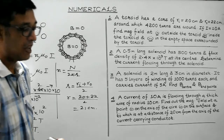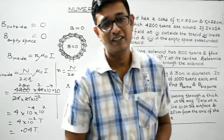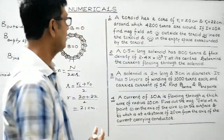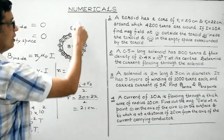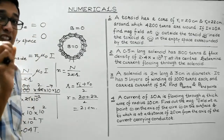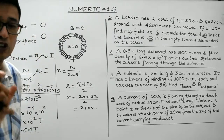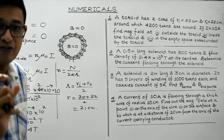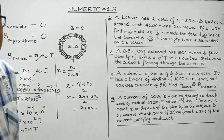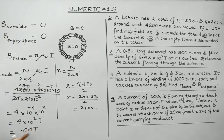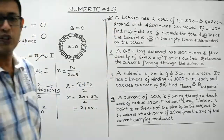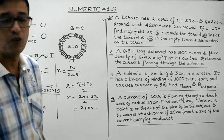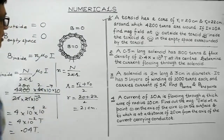So the magnetic field inside the toroidal solenoid is 0.04 tesla. In the empty space surrounded by the solenoid and outside the toroid, the magnetic field is zero in both cases. The magnetic field in a toroidal solenoid remains confined only within the solenoid. We've worked through question number one — it was based on a straightforward direct formula. Let's proceed to question number two.